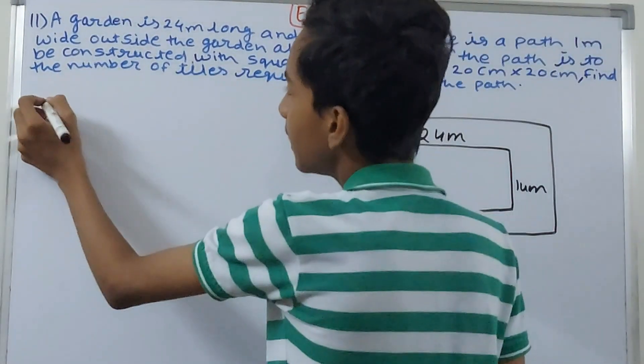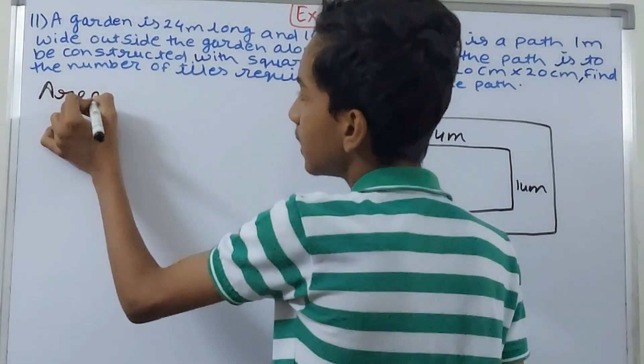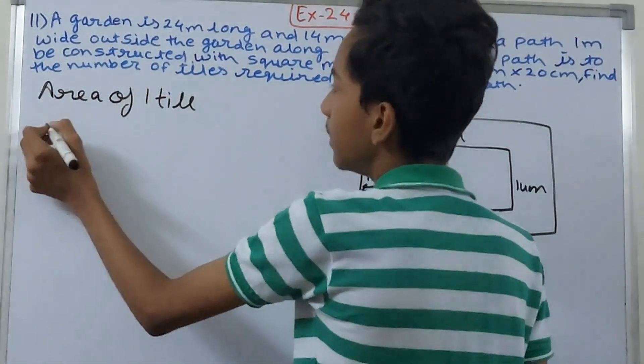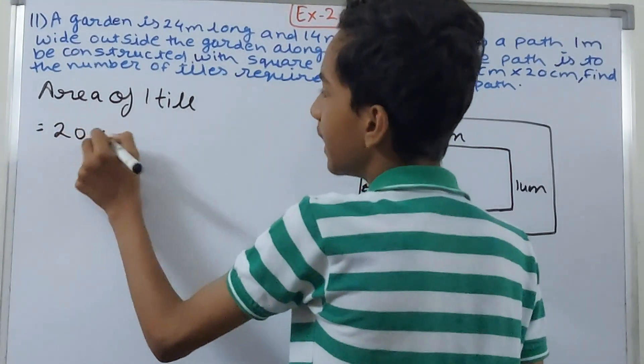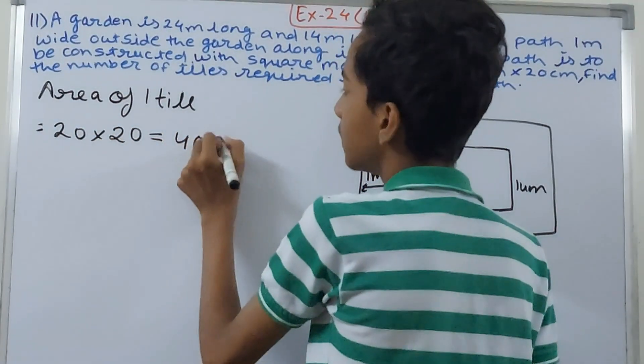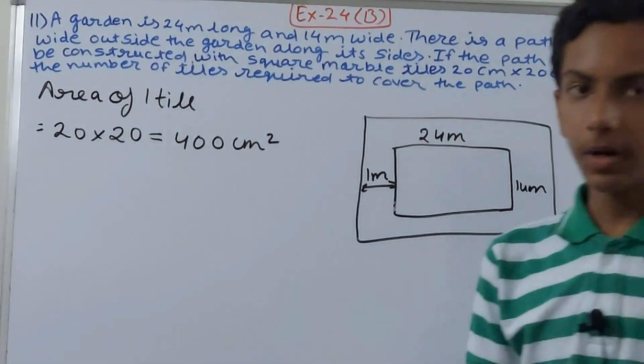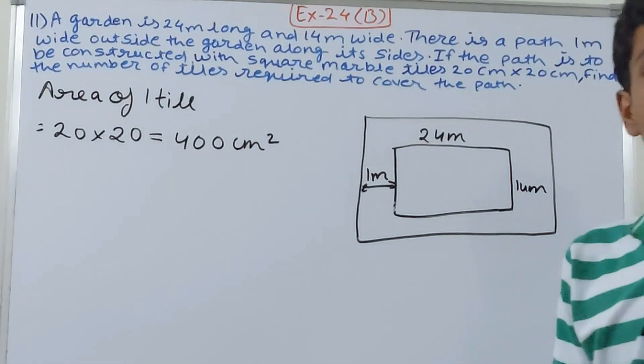We know area of one tile is 20 centimeter into 20 centimeters, so let's calculate that first. Area of one tile equals 20 into 20, that will be 400 square centimeters. This becomes area of one tile.